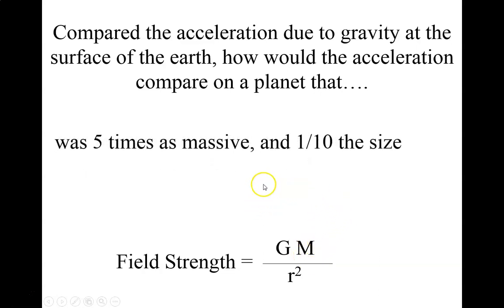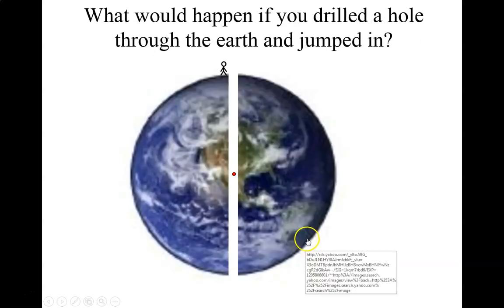So let's say it was five times as massive and one tenth the size. Do this in your head. Got an answer yet? Probably not. Maybe so. Well, if we multiply the mass times five, that's going to make this whole top worth five times. And if we divide by one tenth squared, well, one tenth squared is one hundredth. So divide by a hundredth and you get one hundred. So it would be five hundred times as strong. So it would be pretty strong gravity on that planet.